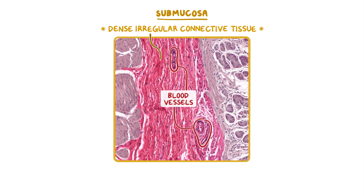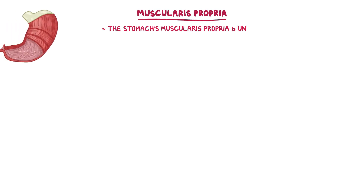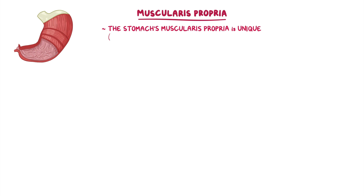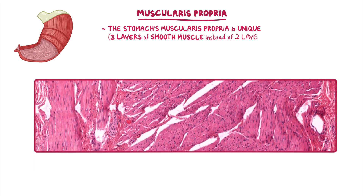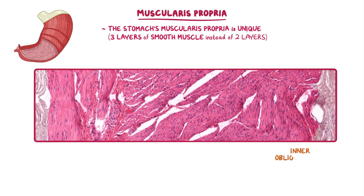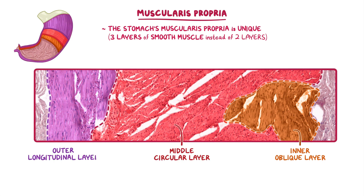On the right of this image we can see a portion of the overlying mucosa, and on the left is a portion of the muscularis propria. The entire stomach's muscularis propria is unique compared to the rest of the GI tract because it has three layers of smooth muscle instead of only two. We can see the inner oblique layer on the right side, closest to the submucosa. The middle layer is the circular layer, and the outer layer is longitudinal. Because this tissue was sectioned longitudinally, the outer layer shows the long shape of muscle fibers best, while the middle layer has cells that appear most circular.